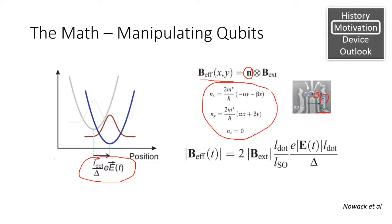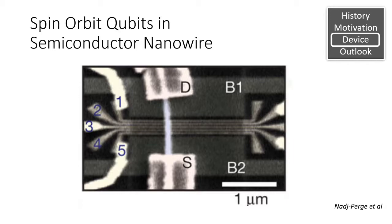So by causing its position to oscillate, we effectively cause an effective oscillating magnetic field, and this is the exact oscillating magnetic field that we need to flip the spin of the electron.